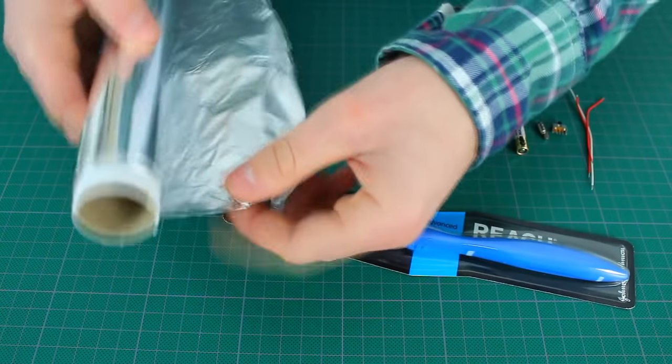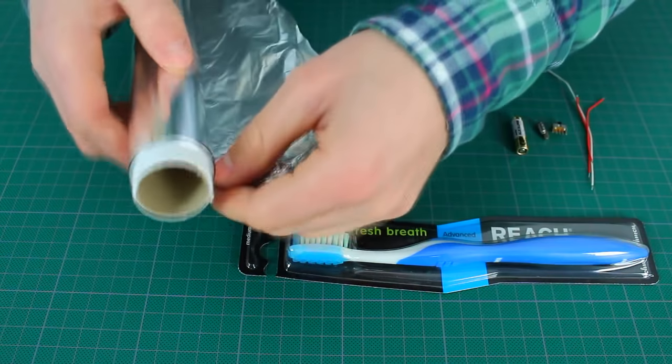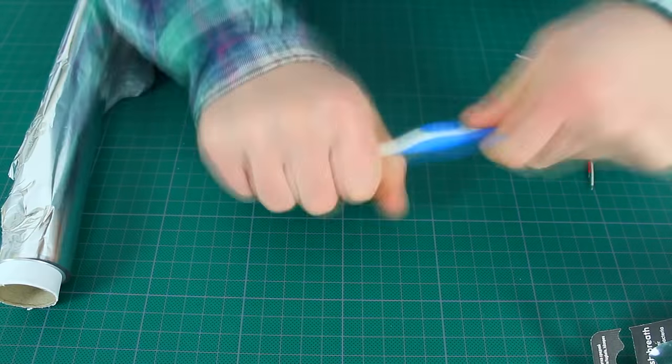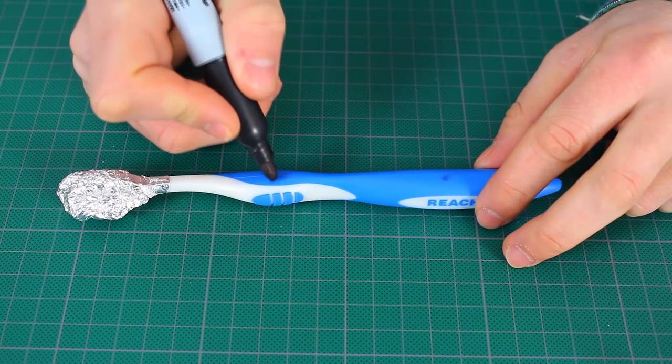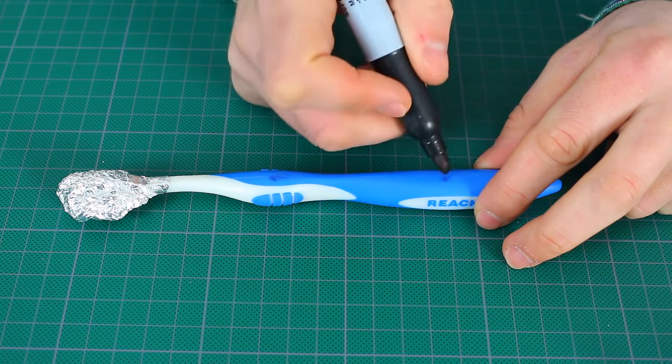So, better to rub the lashes of the toothbrush with foil to prevent them from dust during work. Now we need to cut the handle in two places. The vibromotor will be in the upper part and the battery will be below.